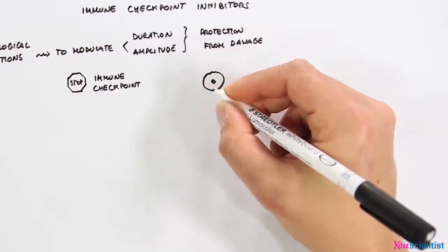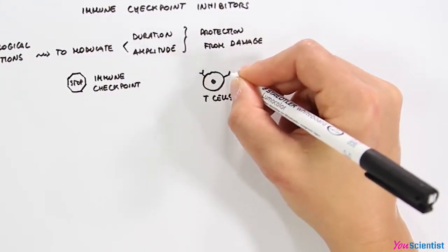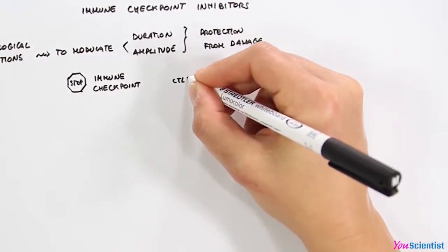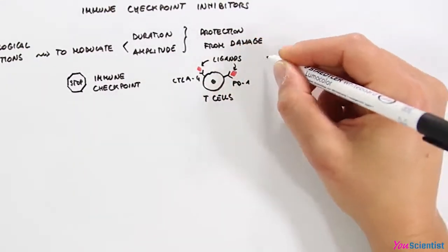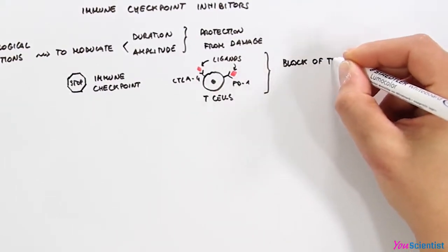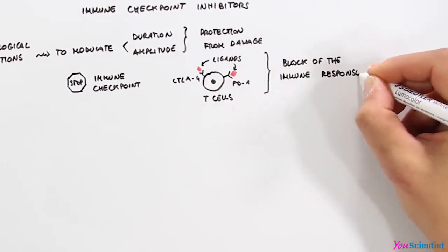Checkpoints are turned on when specific receptors on T cell membranes, such as CTLA-4 and PD-1, interact with their respective ligands. This interaction inhibits the activity of T cells and blocks the immune response.